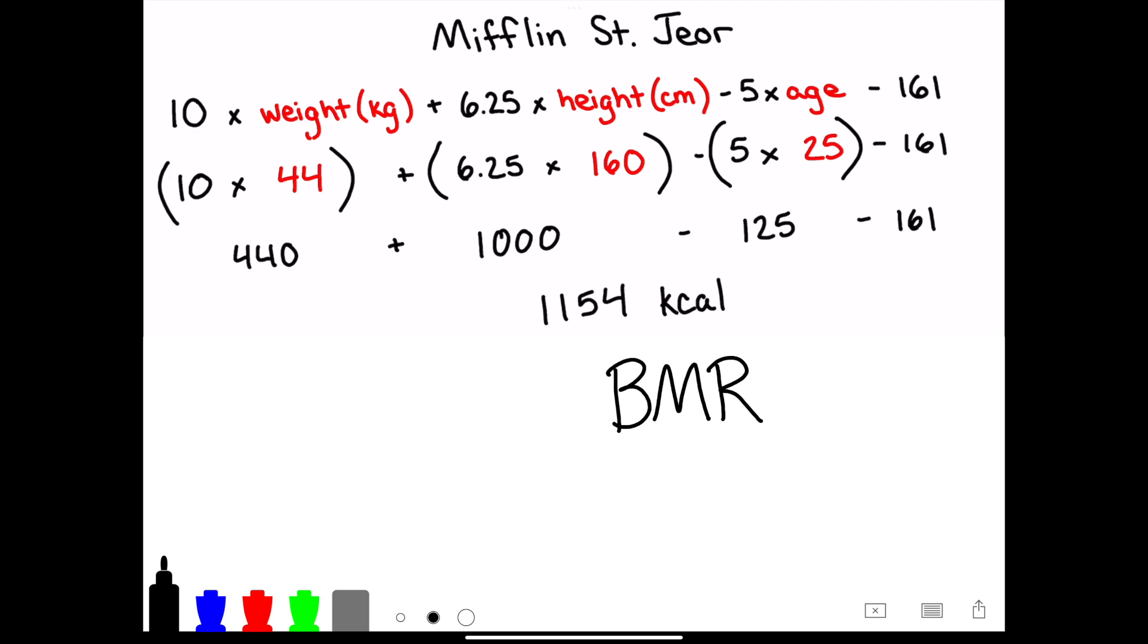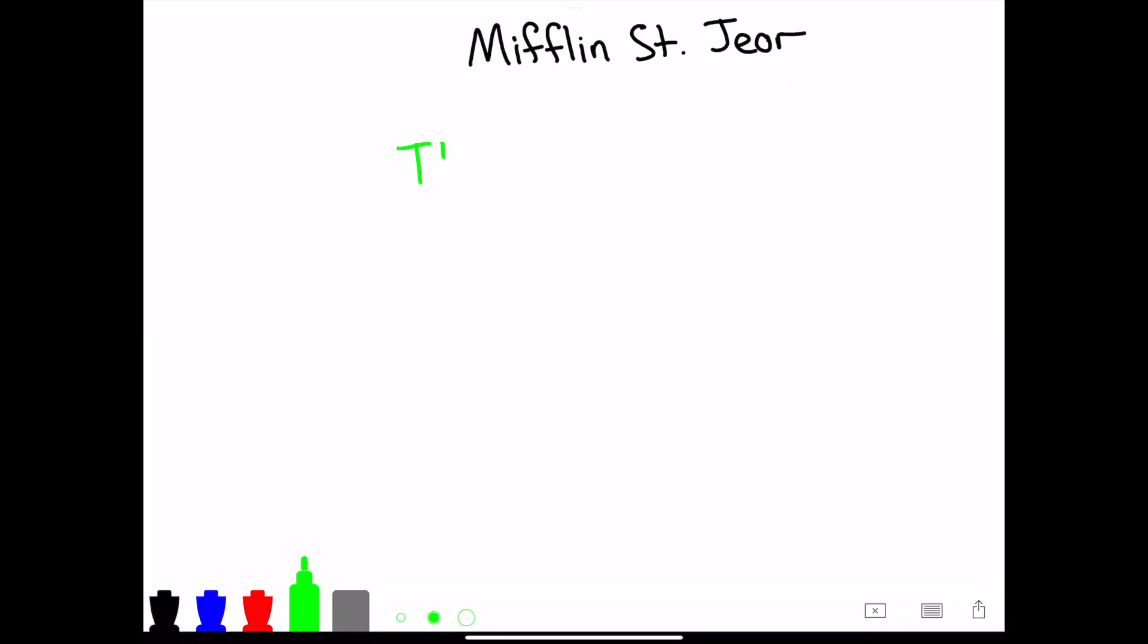This is the amount of calories we need to survive with no activity whatsoever, like if you were in a coma. To get the amount of calories we need to fuel our tasks of daily living and our activities, we want to get something called our Total Daily Energy Expenditure, or TDEE. To do this, we take the BMR value and multiply it by a physical activity factor, PAF.